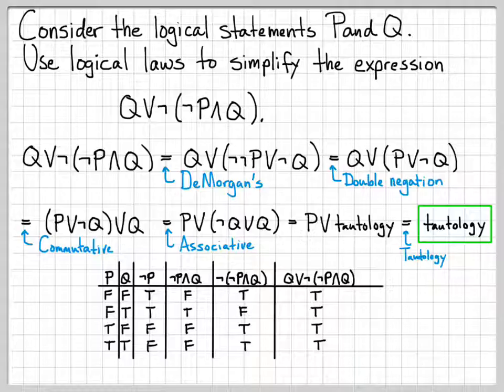So that confirms that the steps that we did here, applying DeMorgan's, applying the double negation law, applying the commutative law, the associative law, the tautology law, all those steps we did were legitimate because we've been able to check our work with this truth table.